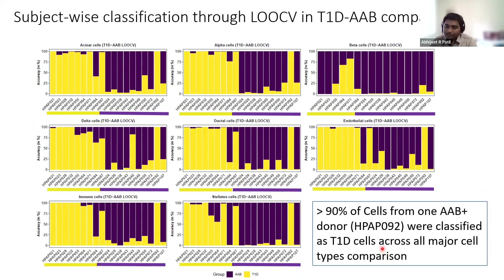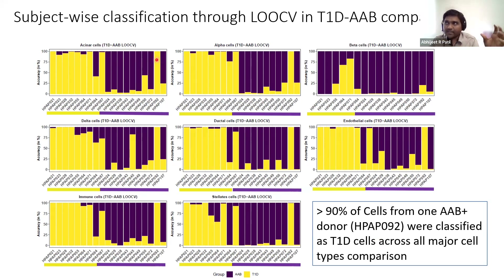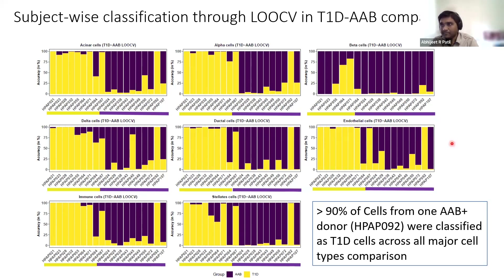We wanted to confirm whether HPAP-92 was an artifact or a real signal from the model, so we used leave-one-out cross validation. In this approach, all donors except one go into the training set, and the left-out donor becomes the test set. Across all different cell types, whenever we plugged in HPAP-92, most of the cells were being predicted as type 1 diabetic. This served as cross-validation confirming that this particular donor was classified as type 1 diabetic.